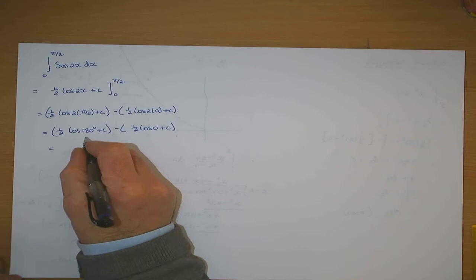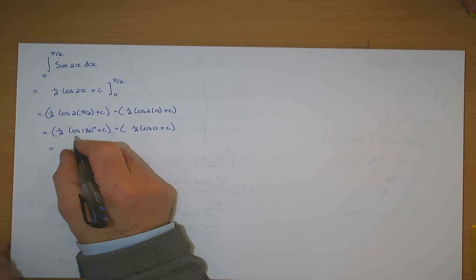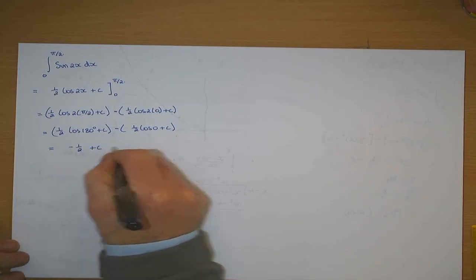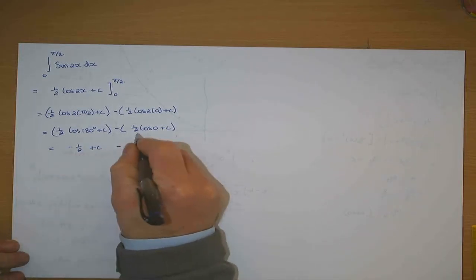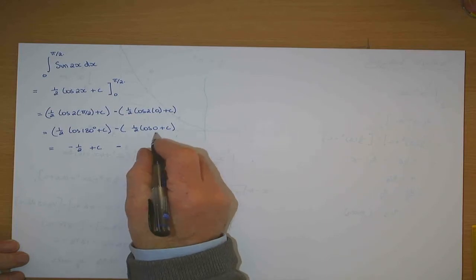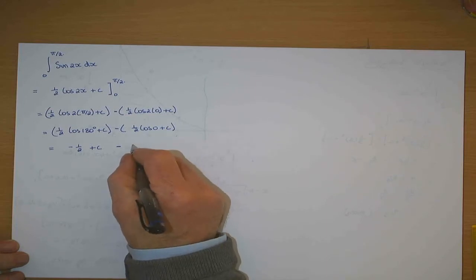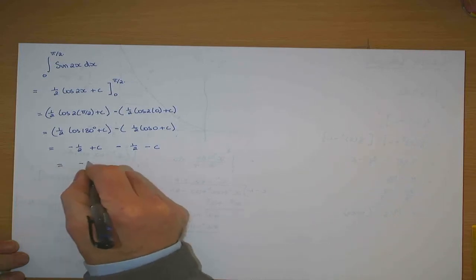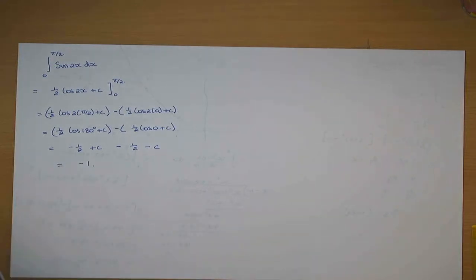That's equal to minus a half times the cosine of 180 degrees plus c, minus minus a half times the cosine of zero plus c. Cosine of 180 degrees is minus one, so minus a half times minus one is plus a half, plus c. Cosine of zero is one, so minus a half times one is minus a half, minus c. So that's a half minus a half — which is minus one.